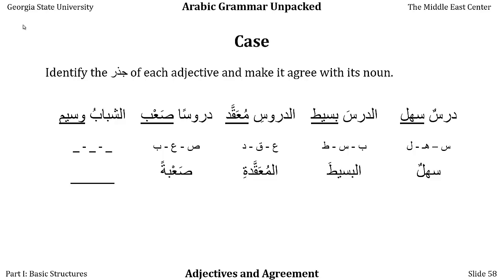In the last example, we have alshabab — the young men. Masculine, definite (alif-lam), human plural, in the marfu' case. We're going to add alif-lam to wasim to make it agree in definiteness, and the -un ending for the masculine sound plural in the marfu' case: alshabab alwasimun, the handsome young men. But again, your Arabic friend will tell you it's actually wissam — another irregular human plural. If you say alwasimun, everyone understands perfectly; they'll say 'By the way, it's wissam, but don't worry about it.'